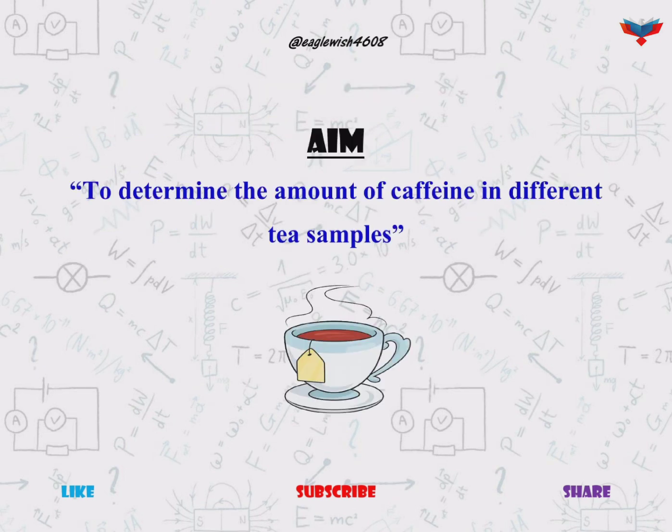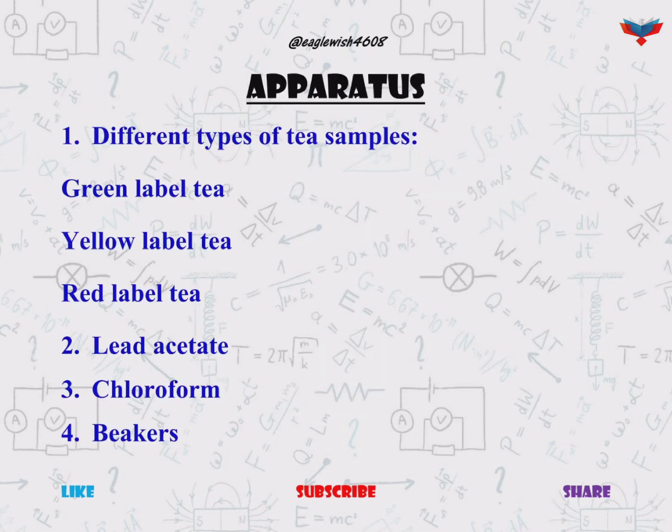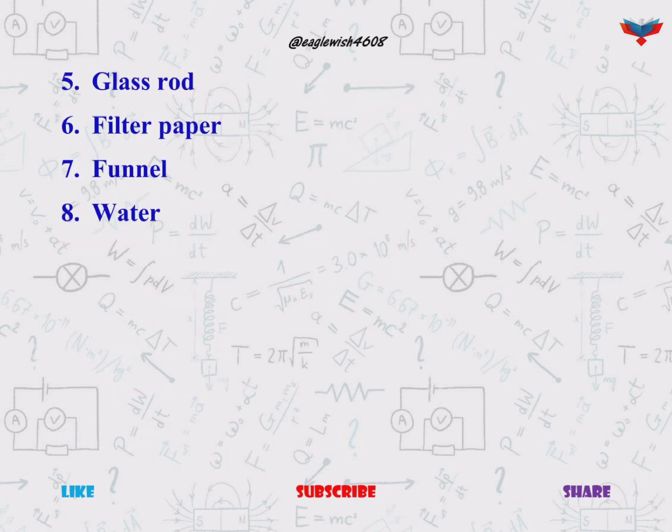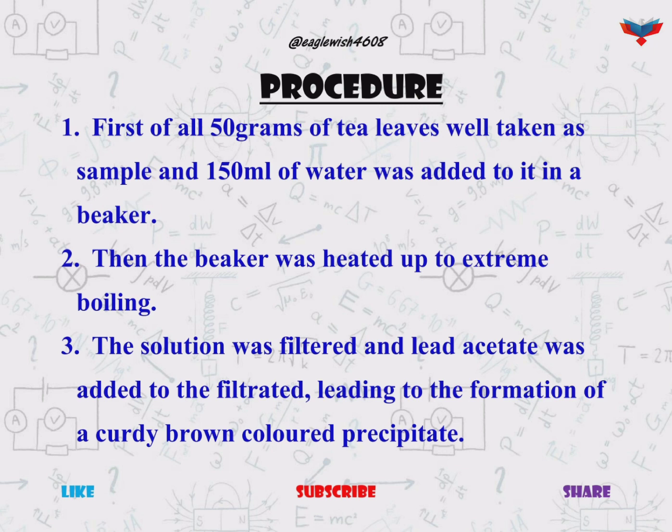After the introduction we will write the aim of the project along with the list of apparatus required in our experiment. In the procedure section we will write the steps to determine the caffeine in three different tea samples.